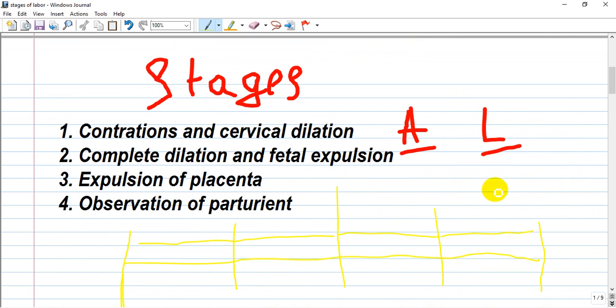Third is expulsion of placenta, and fourth is observation of the parturient. To understand how the stages occur, I've drawn a timeline here from initial to last stage. In the third stage we see some contractions.